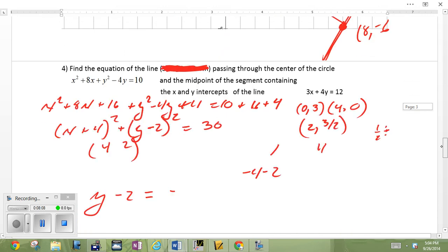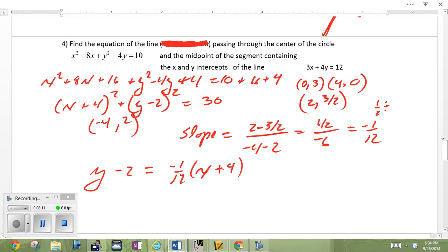Last problem. Find the equation of the line. I crossed out standard form because I don't really care with this one, as I told you, in the interest of time. Passing through the center of the circle is lined up here, so you can see that. Find the center of that circle, negative 4, 2. And the midpoint of the segment containing the X and Y intercepts of this line. Here's this line, X and Y intercepts. What are they? X intercepts of Y equals 0. There it is, 4, 0. Y intercepts of X equals 0. The midpoint of the segment containing that, 2, 3 halves.